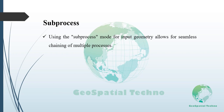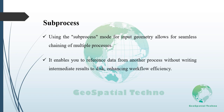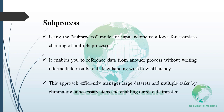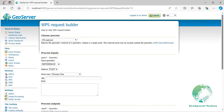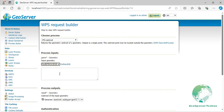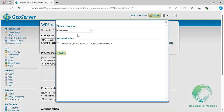Using the subprocess mode for input geometry in a WPS request allows for seamless chaining of multiple processes. It enables you to reference data from another process without writing intermediate results, significantly enhancing workflow efficiency. This approach is particularly beneficial when managing large datasets or executing multiple processing tasks, as it eliminates unnecessary handling steps and facilitates direct data transfer between interconnected processes. In the WPS Request Builder, select Subprocess from the Process Input drop-down menu, then click Define/Edit to open a new page where you can choose an additional process for chaining.